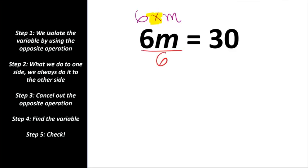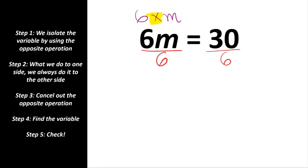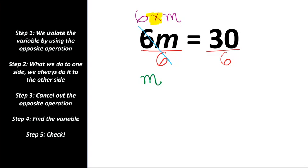What we do to one side, we must do to the other side, so the equation is balanced. So let's divide 30 by 6. Now 6 divided by 6 is 1, and when the numerical coefficient is 1, we don't need to write it down. So m times 6 and m divided by 6 just cancel each other out — we are left with m equals 30 divided by 6, which is 5.